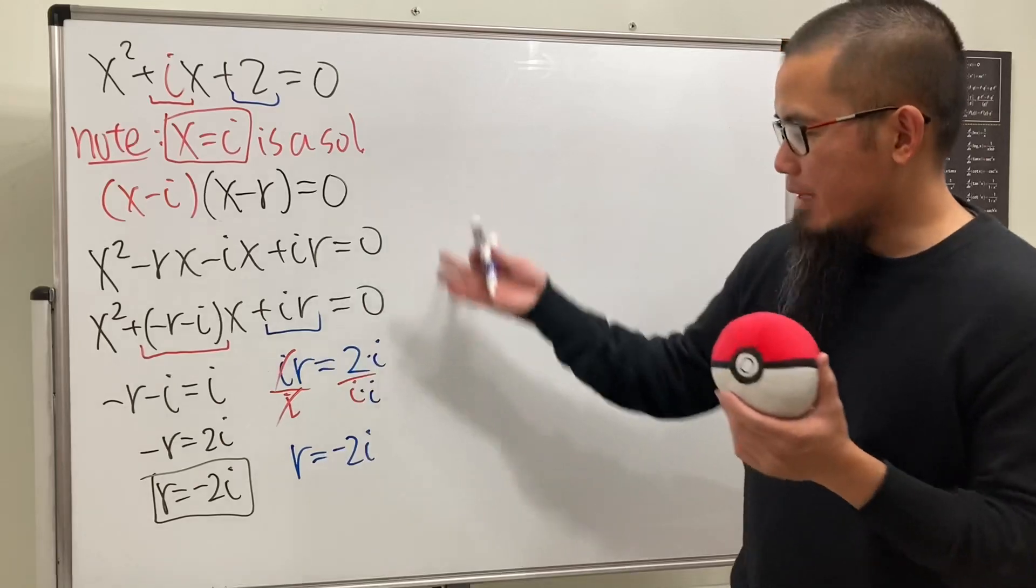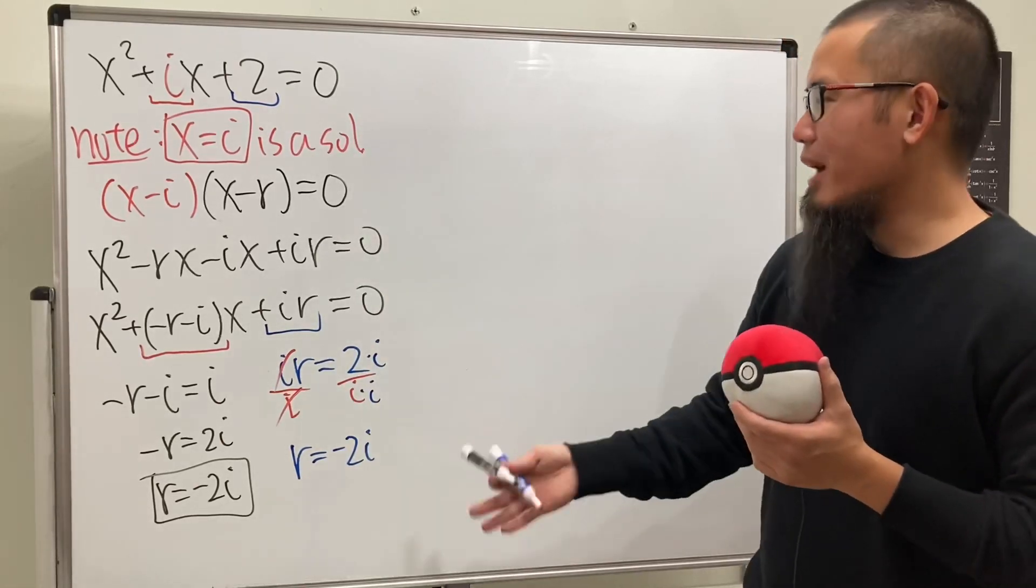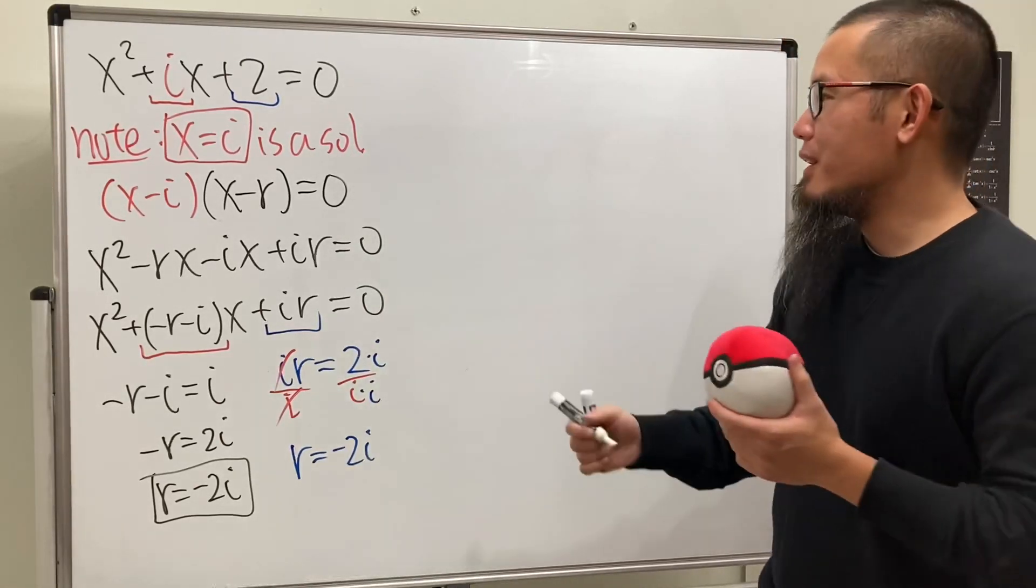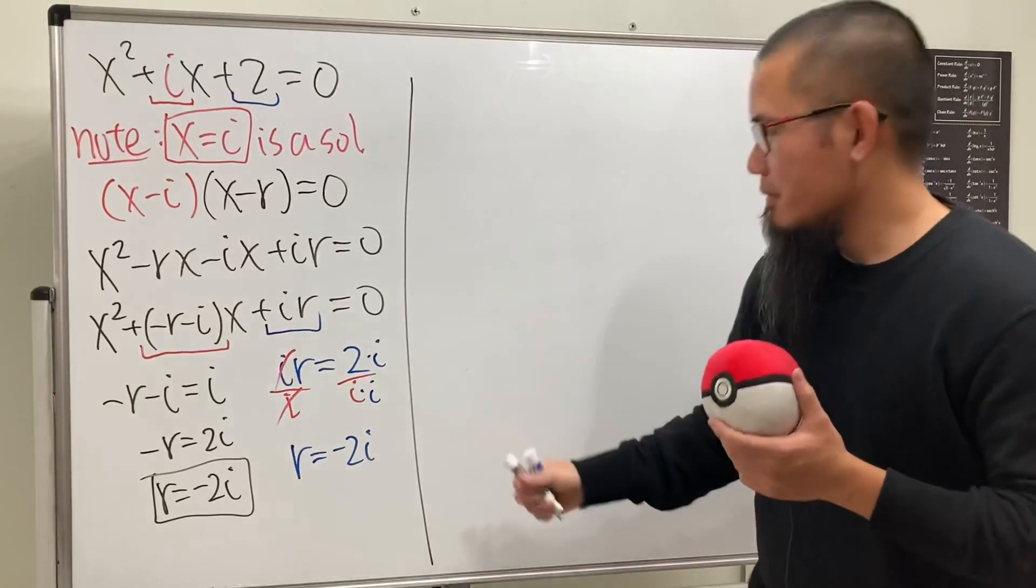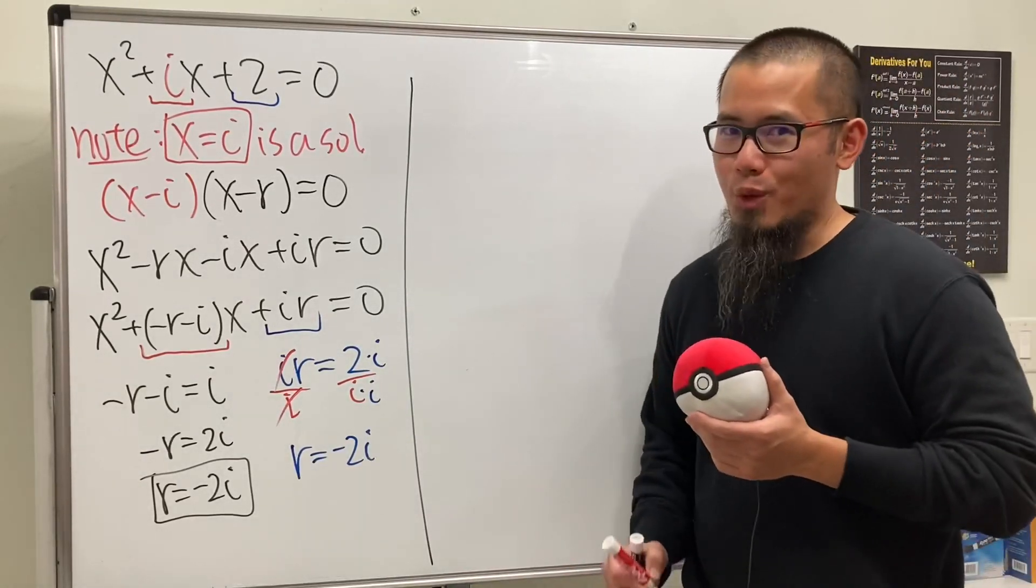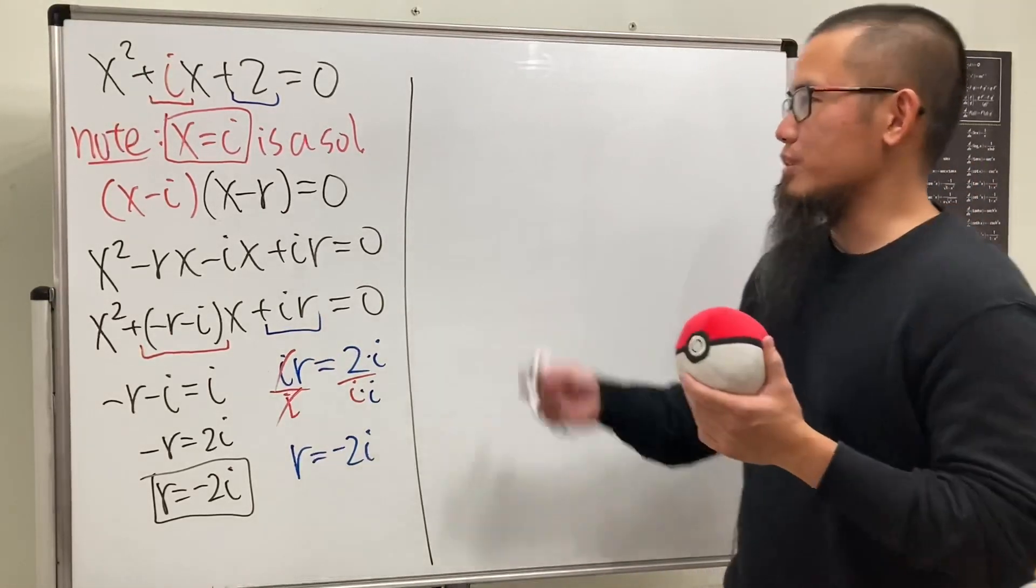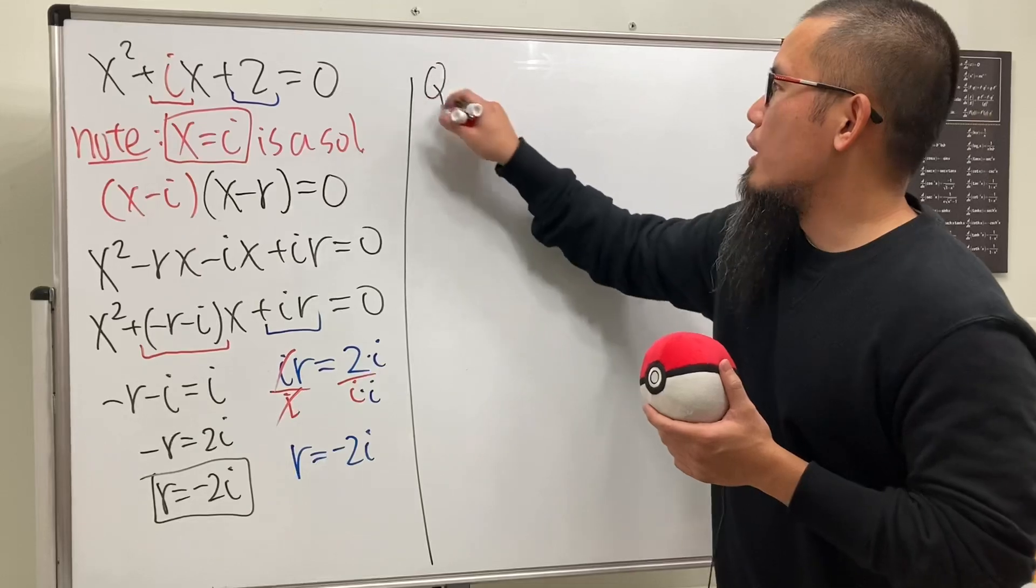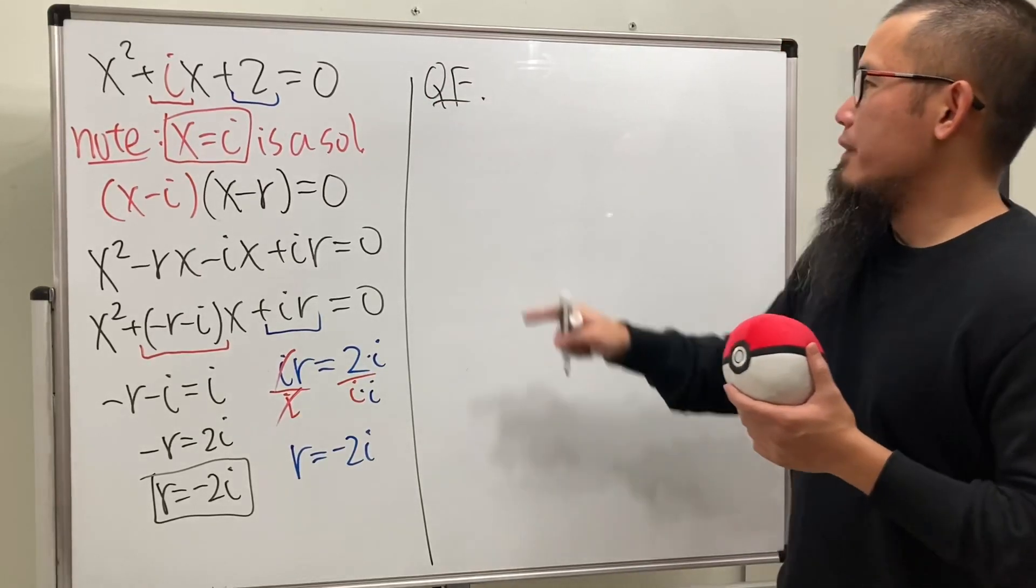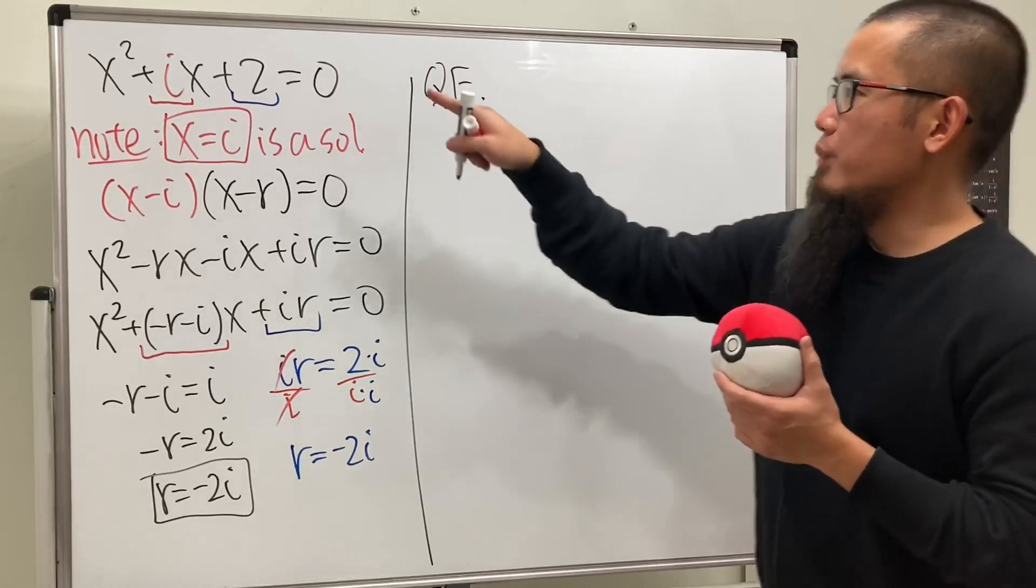Now, what if we use the quadratic formula? Will that give us the same answer? Of course it will. But let's just work that out for fun. So here is the quadratic formula—not OF, but this is QF. A is 1, B is i,